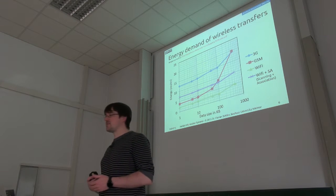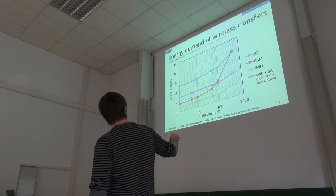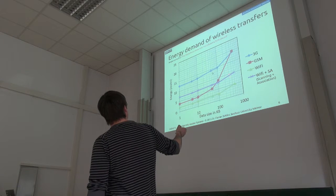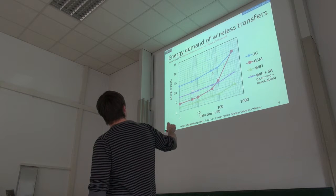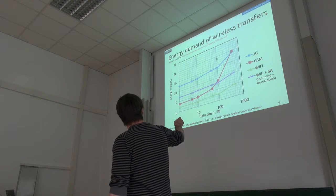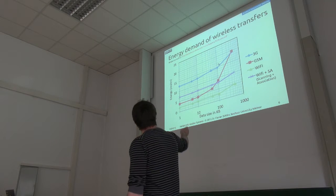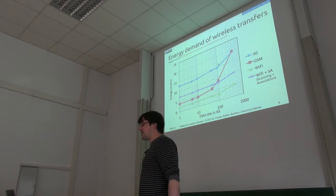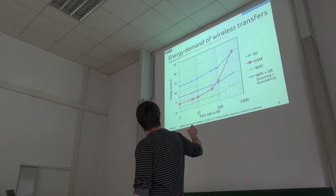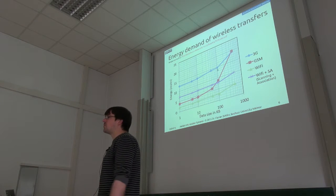Let's look at a small graph showing how much energy it takes in total to transfer one kilobyte, 10 kilobytes, 100, or 1000 kilobytes over different networks — 3G, GSM, and Wi-Fi. One curve includes Wi-Fi scanning and network association, so there's a fixed cost at the beginning. The lowest curve assumes you're already connected to the right Wi-Fi network. Does anyone have an idea why the very old GSM 2G, which is not much worse in energy consumption than Wi-Fi for small file sizes, goes up so fast for larger files?